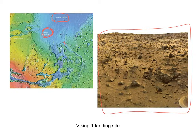This is the Viking 1 landing site — you can see there's a fair amount of cobble-sized rocks. When they landed Viking 1 and 2, they didn't have very good images from orbit as to how rough the terrain was going to be, and these landers were not real smart — 1976 computers were driving them down.